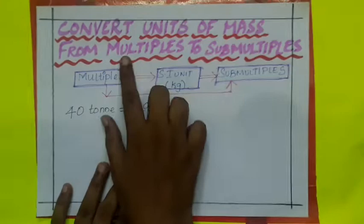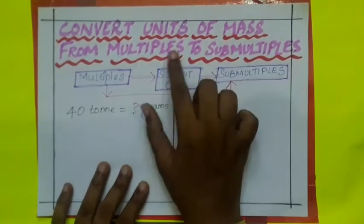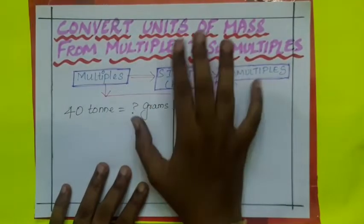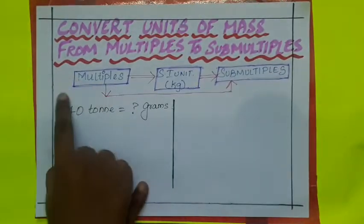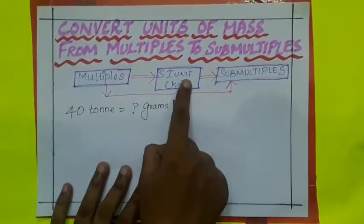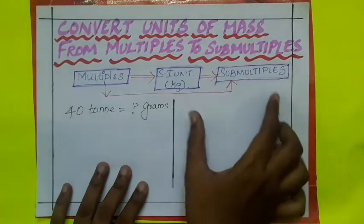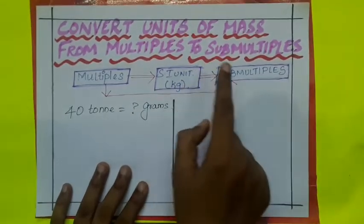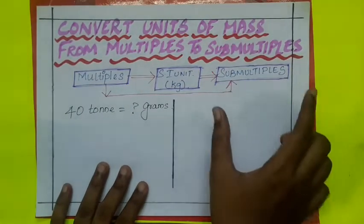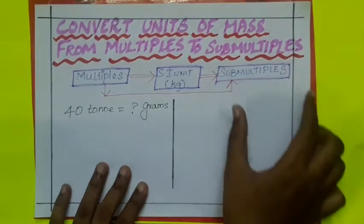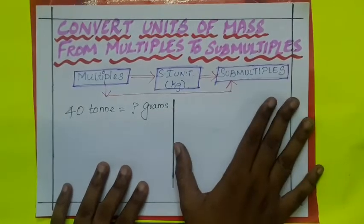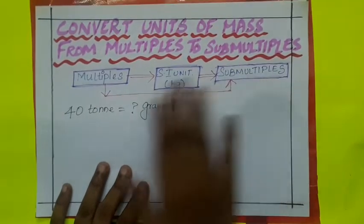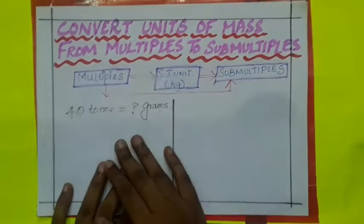Let's see how to convert units of mass from multiples to submultiples. To solve this kind of problem, we should convert units of multiples into SI unit. We will get an answer and then convert SI unit into units of submultiples. You get another answer. Multiply both the answers, you will arrive a formula. Apply that formula to solve the problem.